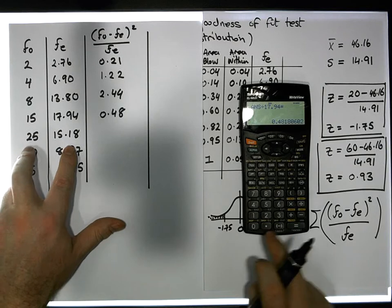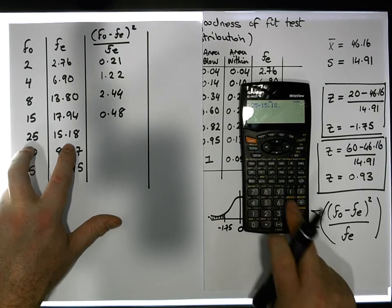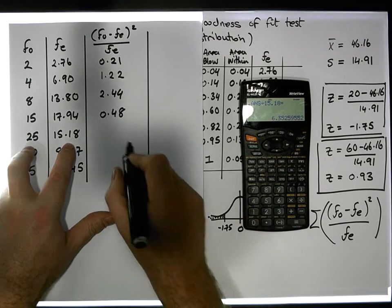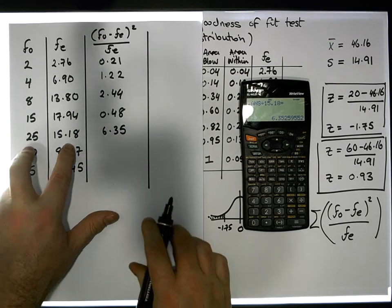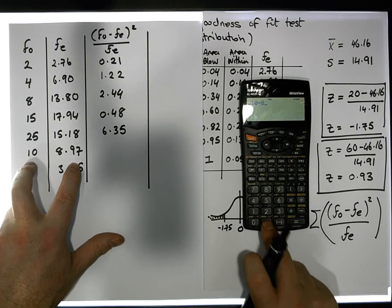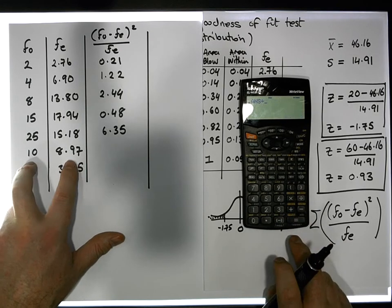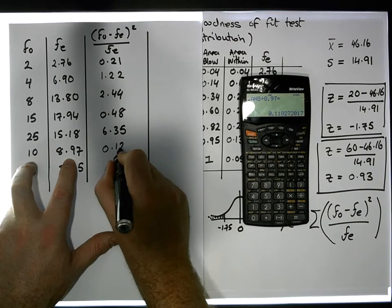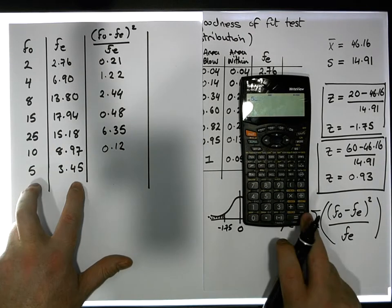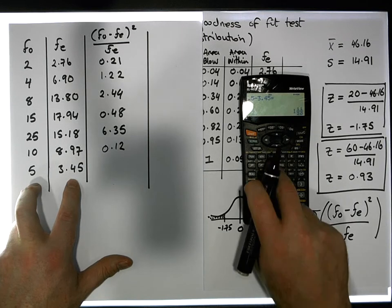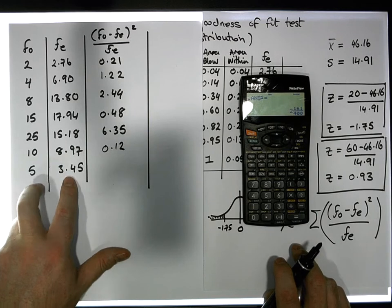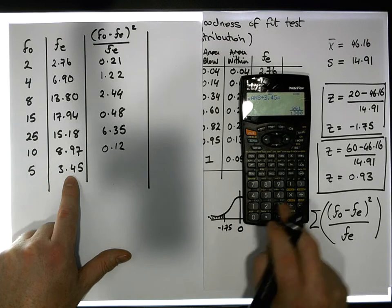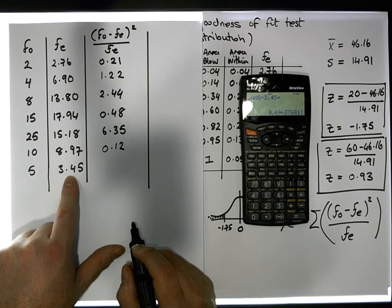The next value is 25 minus 15.18, squared, divided by 15.18, which gives approximately 6.35. Then 10 minus 8.97 squared divided by 8.97 gives approximately 0.12. And finally, 5 minus 3.45, squared, divided by 3.45, gives approximately 0.696, which is approximately 0.70.